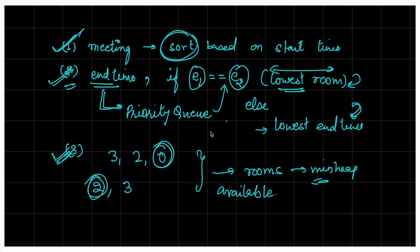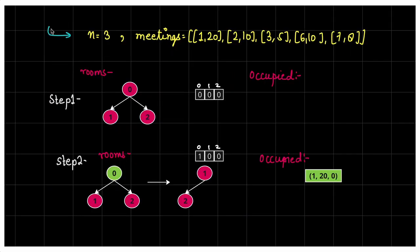Now let's take the second test case and trace through using all three structures. n=3, meetings are 1,20 then 2,10 then 3,5 then 6,10 then 7,8 — this array is already sorted by start time (1, 2, 3, 6, 7), but in general we need to sort it. After sorting, the meetings are in this order.